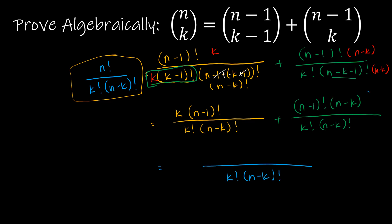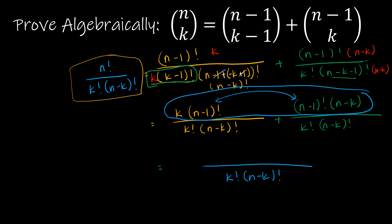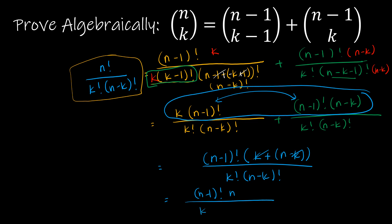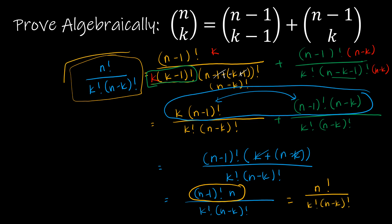Combining the numerators over the common denominator k!·(n−k)!: I have k·(n−1)! + (n−1)!·(n−k). Factoring out (n−1)!, I get (n−1)!·(k + (n−k)) = (n−1)!·n = n!. So the full expression is n! / (k!·(n−k)!), which is exactly C(n,k). I have in fact proved algebraically that the two sides are equal.